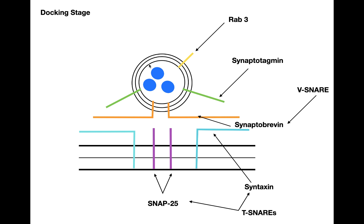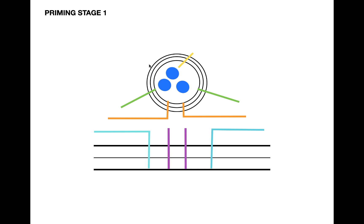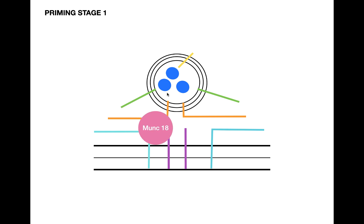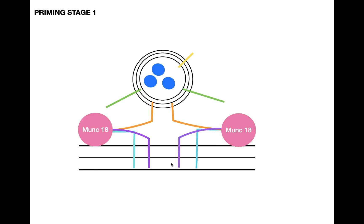Now let's see how these proteins interact to facilitate vesicular fusion. A cytosolic protein called MUNC18 comes in and binds synaptobrevin, SNAP25, and syntaxin together — basically clamping the V-snare and T-snares together. This causes something called a ternary complex to form.